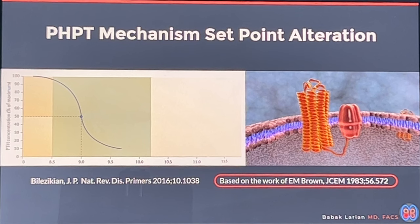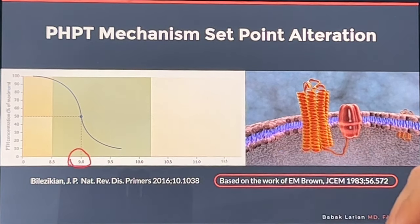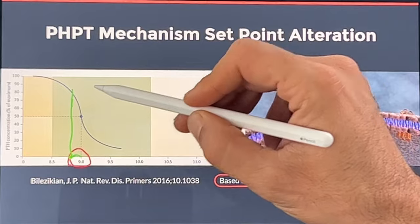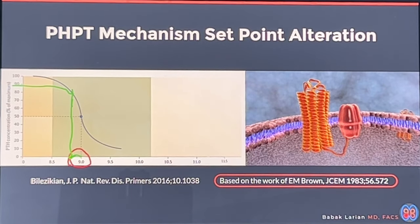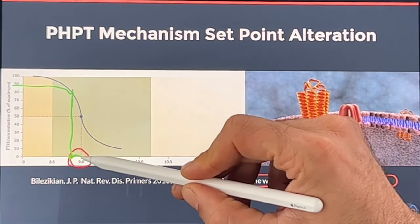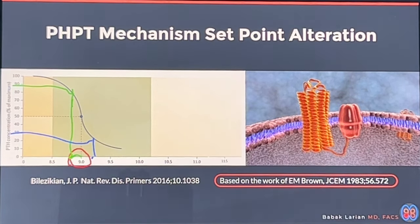Normal parathyroids have a setting for calcium — each individual is genetically set for a certain number. This particular patient is set for a calcium of 9.0. When calcium drops from 9.0 to 8.9, PTH levels rise. That increased PTH goes to the bones to release calcium, tells the kidneys to reabsorb calcium from urine, and activates vitamin D in the kidneys to increase intestinal calcium absorption from 20% to 80%. All three mechanisms increase blood calcium. If calcium overshoots to 9.1, PTH decreases to allow the excess to filter out — that's how parathyroid glands maintain tight control.